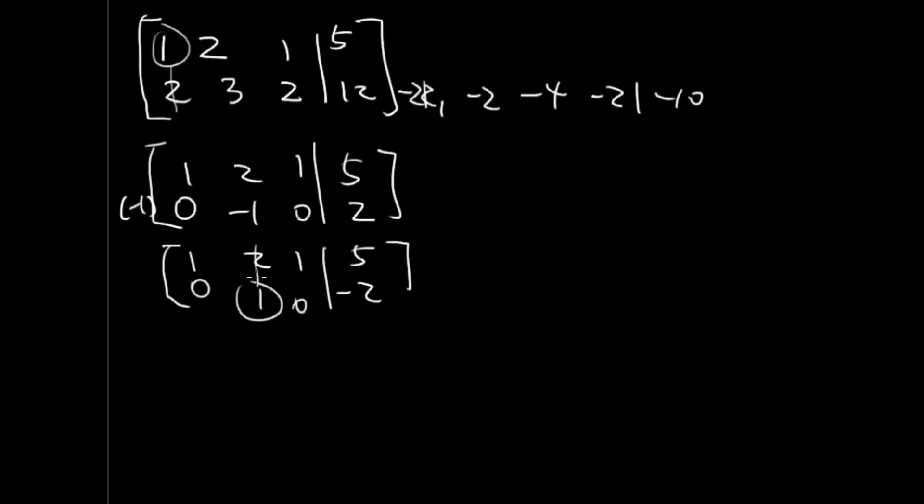And we want to get this to the leading 1. So we're going to take row 2 times negative 2, which is 0, negative 2, 0, positive 4.